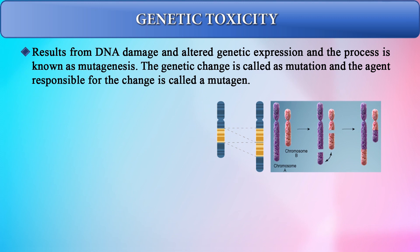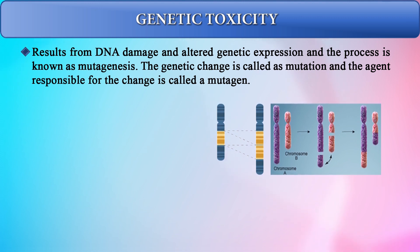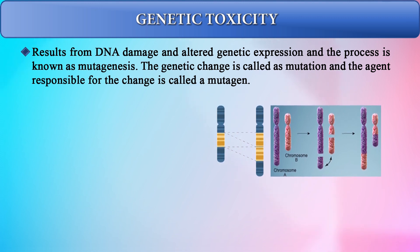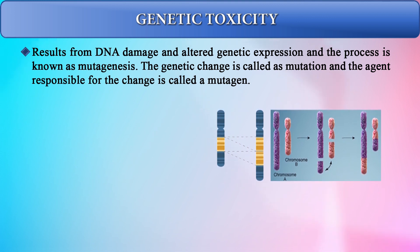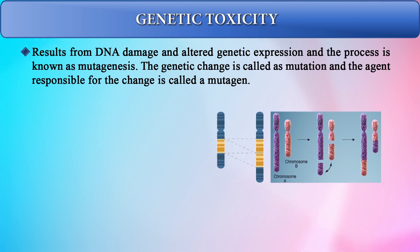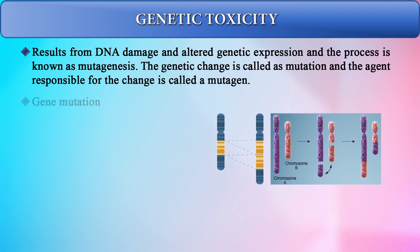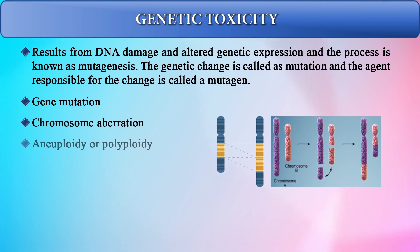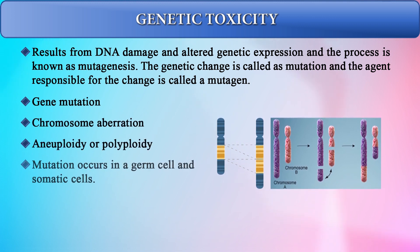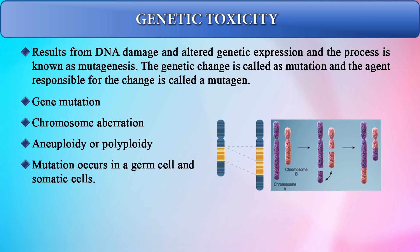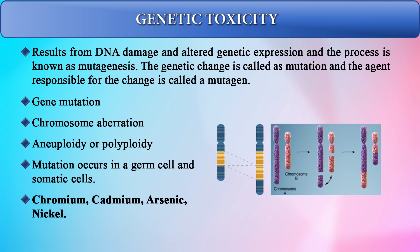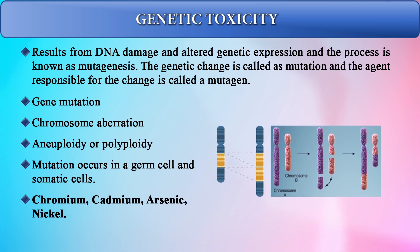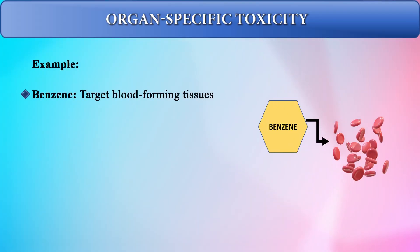Genetic toxicity results from DNA damage that alters genetic expression — also referred to as mutagenesis. The genetic change is known as mutation, and agents causing genetic toxicity are called mutagens. Toxic effects can occur via gene mutation, chromosomal aberrations, aneuploidy, or polyploidy, and mutations can occur in both germ cells and somatic cells. Chromium, cadmium, arsenic, and nickel are all potent genetic toxicity agents.